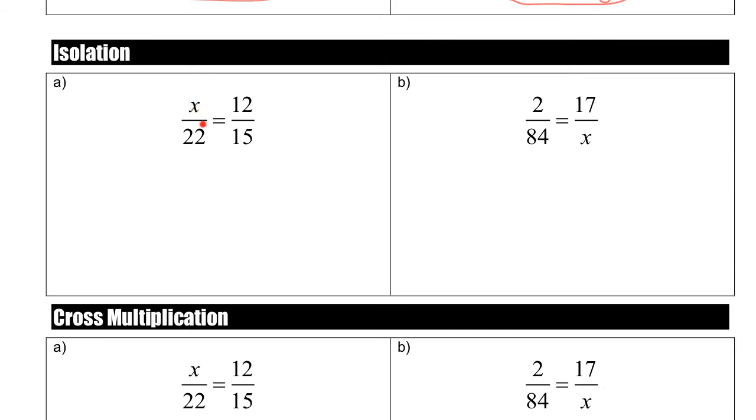And how do we isolate it? Well, we need to get whatever's on the same side on the other side. So in order to do that, we have to do the opposite operations. So if x is being divided by 22, we want the 22 to get moved to the other side. We have to do the opposite. So what's the opposite of dividing by 22? It's multiplying by 22.